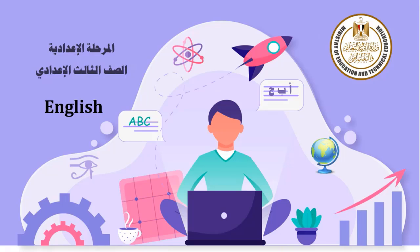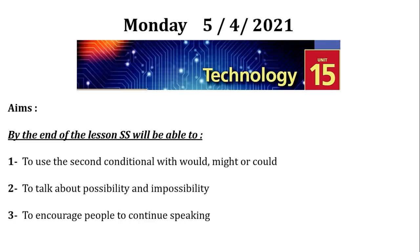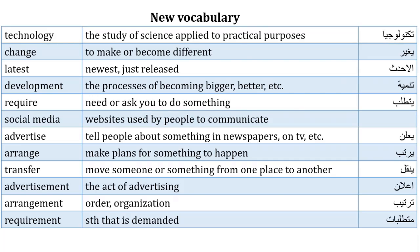Dear students of 3rd preparatory all over Egypt, good afternoon. Today, inshallah, we are going to discuss Unit 15: Technology. We have aims to fulfill at the end: to use the second conditional with would, might, or could, to talk about possibility and impossibility, and to encourage people to continue speaking. First, we are going to discuss the new vocabulary.